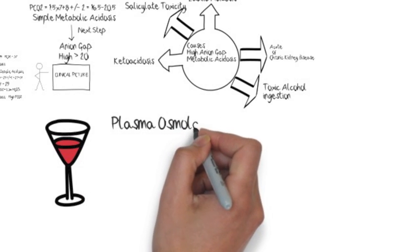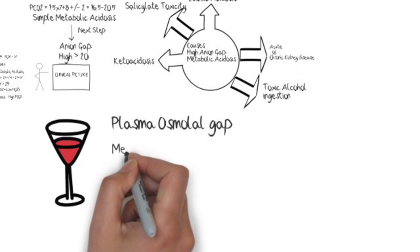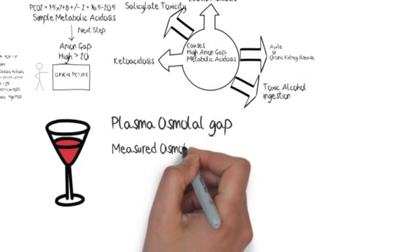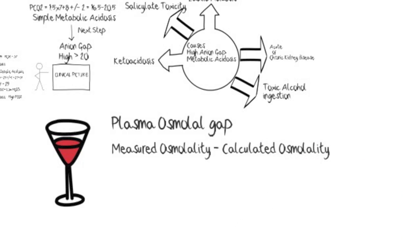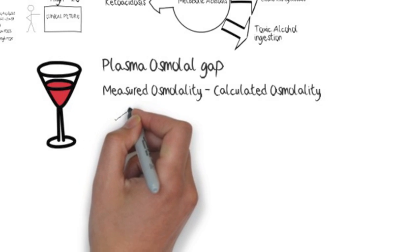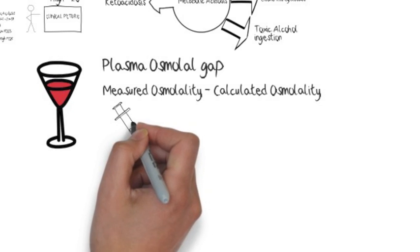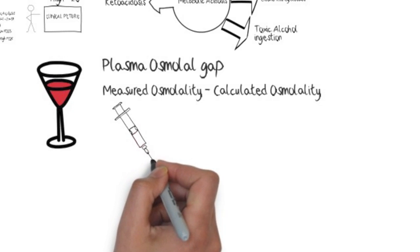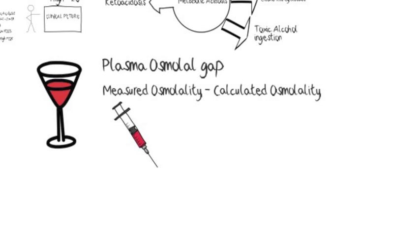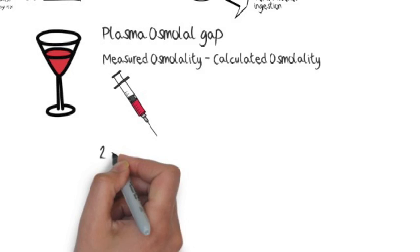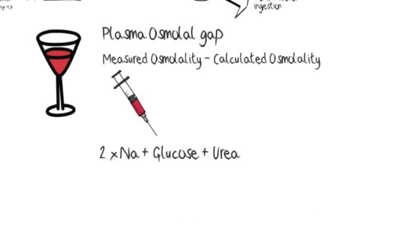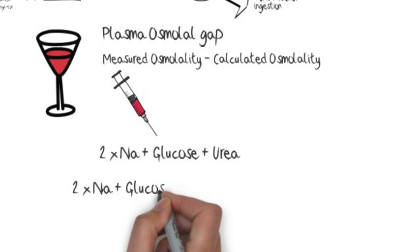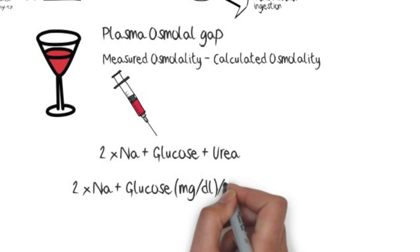For toxic alcohol ingestion, if there is clinical suspicion based on history, you should measure the plasma osmolar gap, which equals measured osmolality minus calculated osmolality. Measured osmolality comes from a lab test for serum osmolality. Calculated osmolality is: 2 × sodium + glucose + urea in standard units, or adjusted if glucose and BUN are in mg/dL.